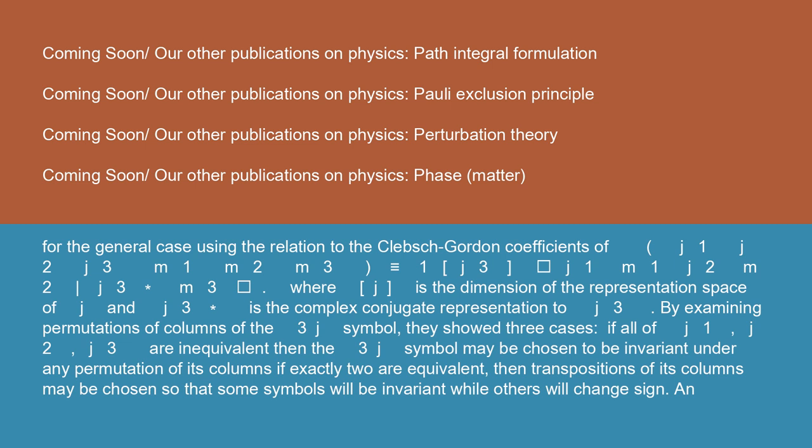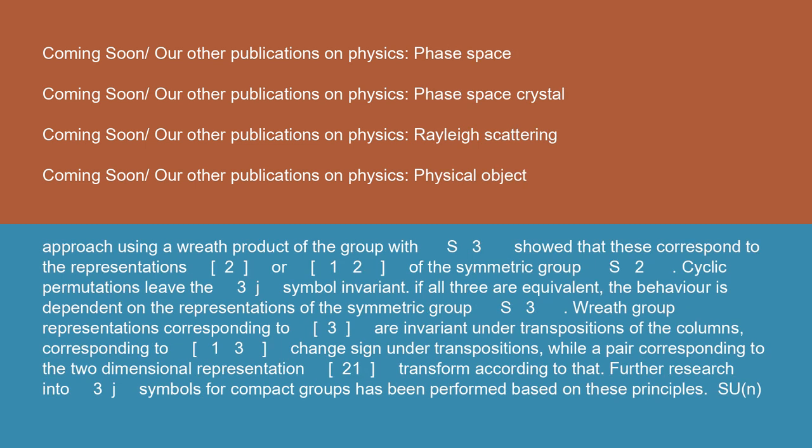If all of J1, J2, J3 are inequivalent, then the three J symbol may be chosen to be invariant under any permutation of its columns. If exactly two are equivalent, then transpositions of its columns may be chosen so that some symbols will be invariant while others will change sign. Approach using a wreath product of the group with S_3 showed that these correspond to the representations 2 or 1^2 of the symmetric group S_2. Cyclic permutations leave the three J symbol invariant. If all three are equivalent, the behavior is dependent on the representations of the symmetric group S_3. Wreath group representations corresponding to 3 are invariant under transpositions of the columns, corresponding to 1^3 change sign under transpositions, while a pair corresponding to the two-dimensional representation 21 transform according to that. Further research into 3J symbols for compact groups has been performed based on these principles.